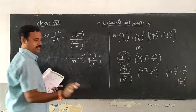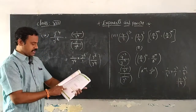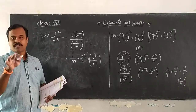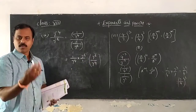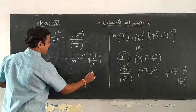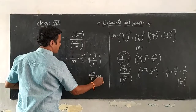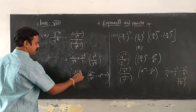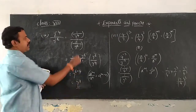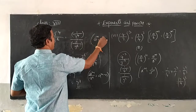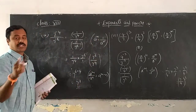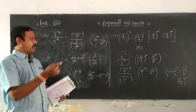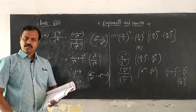You can stop the answer at 7 power 6 by 7 power 4, since the question only asked you to express as positive powers. If you want, you can extend using the formula a power m by a power n equals a power m minus n, giving 7 power 6 minus 4 equals 7 power 2. But this extension is not compulsory. Remember to write the formulas wherever you have used them.